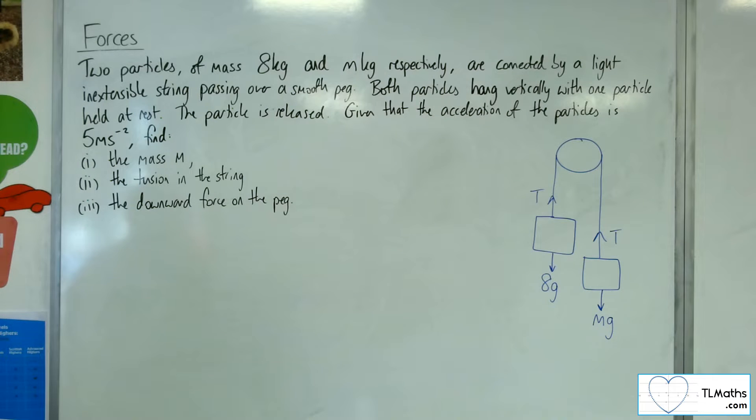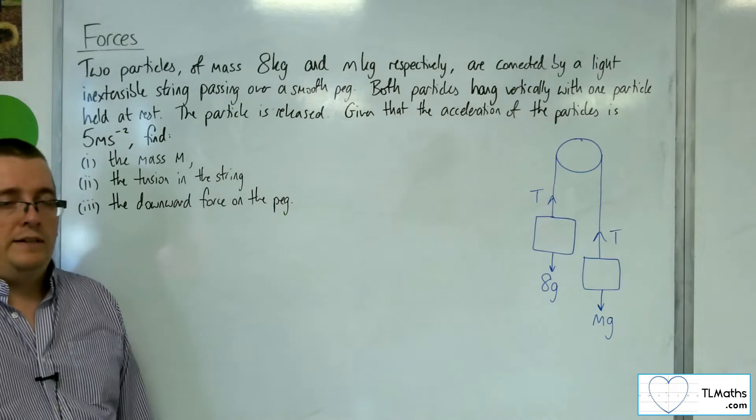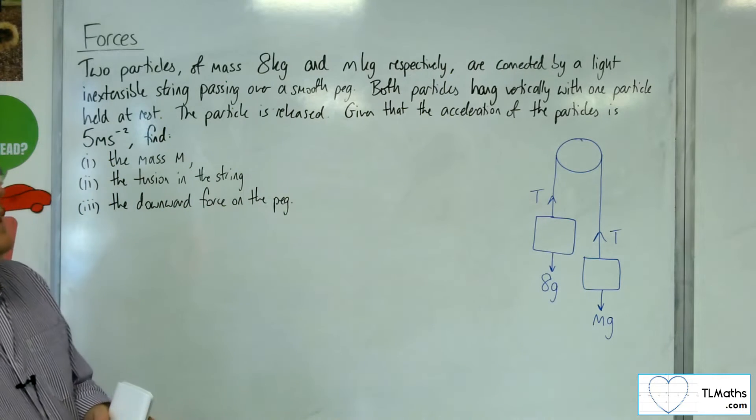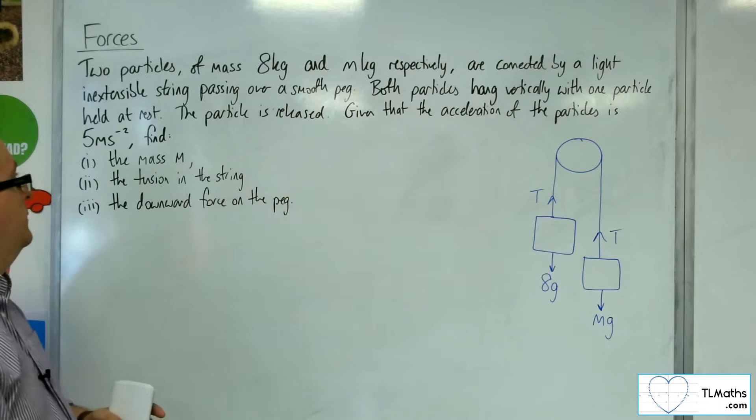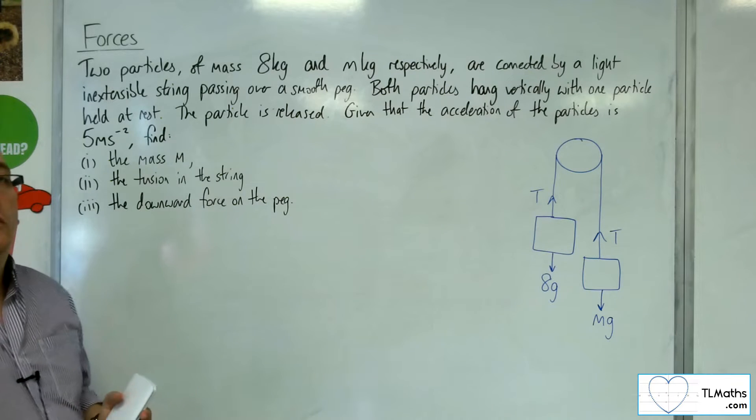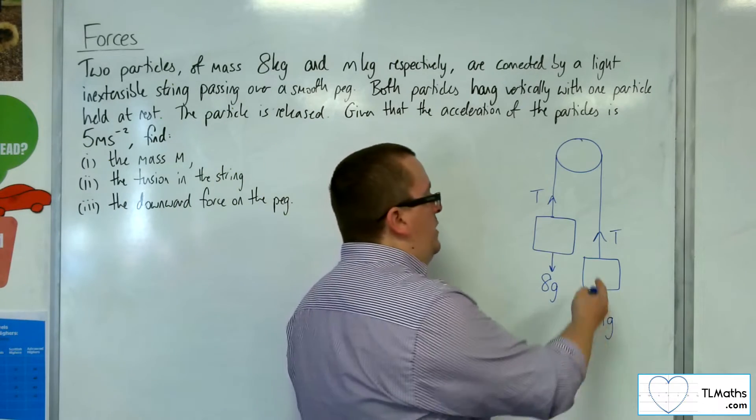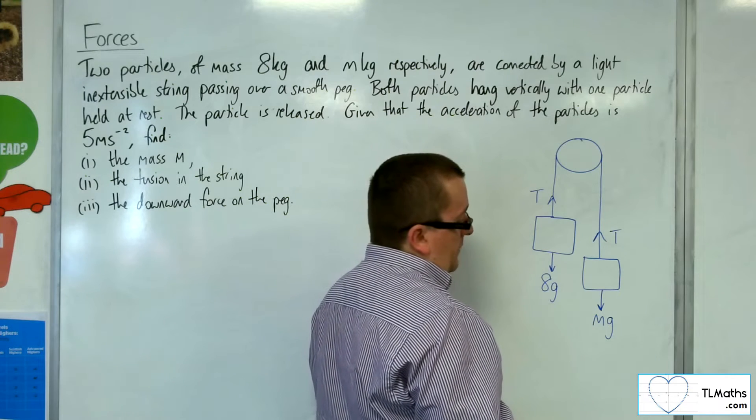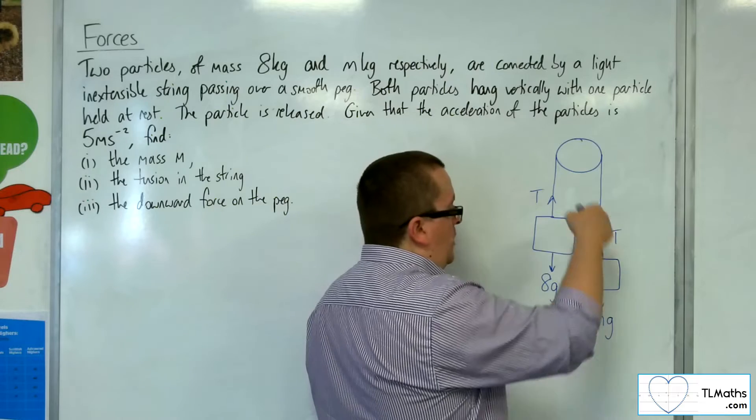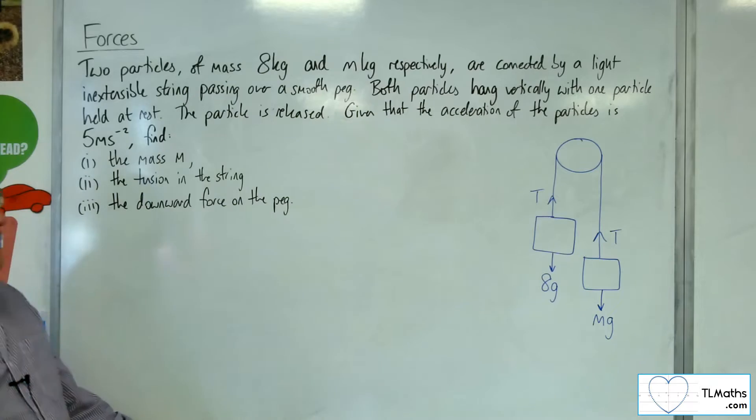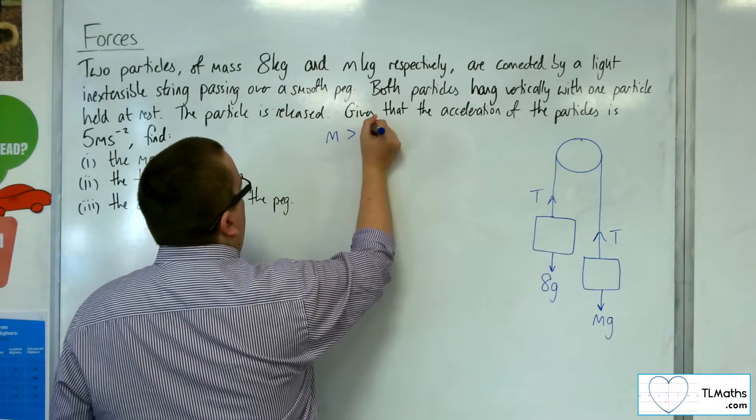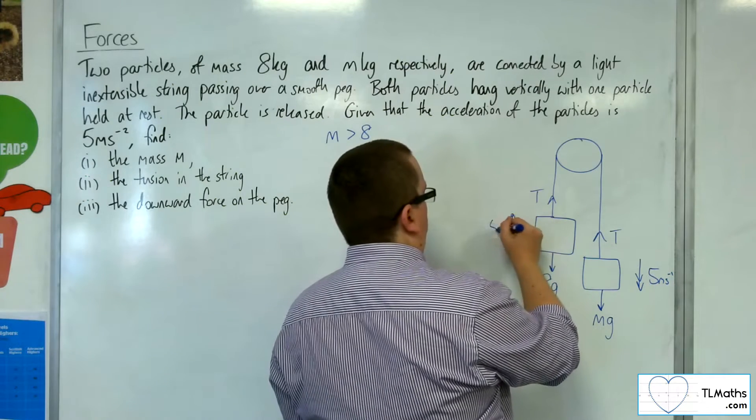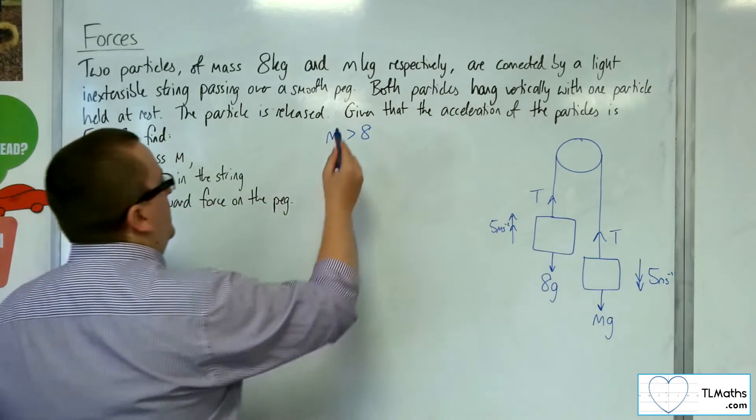Both particles hang vertically with one particle held at rest. The particle is released, given that the acceleration is 5 metres per second per second. Now, in order for this to work, we could have the mass at two different levels because we don't know the actual direction of the acceleration. Because we don't know the mass of this particle, if we knew that the mass of this particle was greater than the mass of that particle, then I know the acceleration is pointing that way. In this case, I don't. So it could be that that one has more mass than that one, in which case it's going that way. So really we've got two situations on our hands. Either m is greater than 8, in which case the acceleration would be this way.